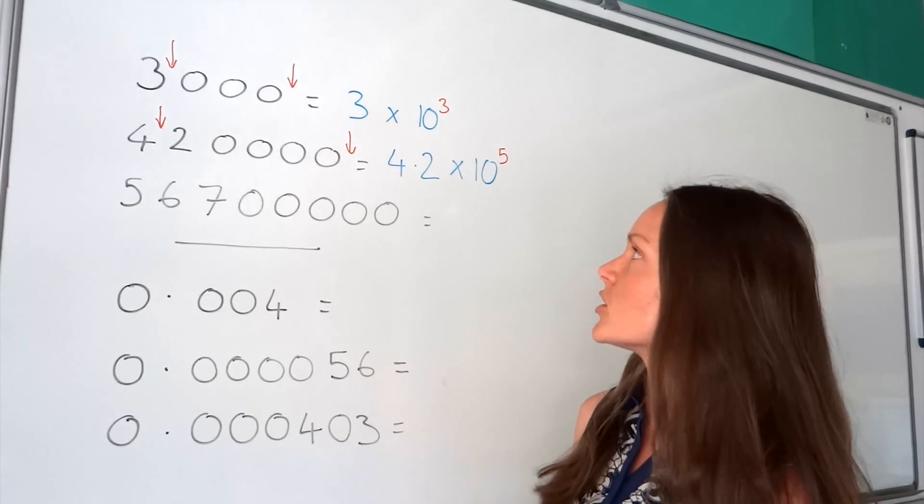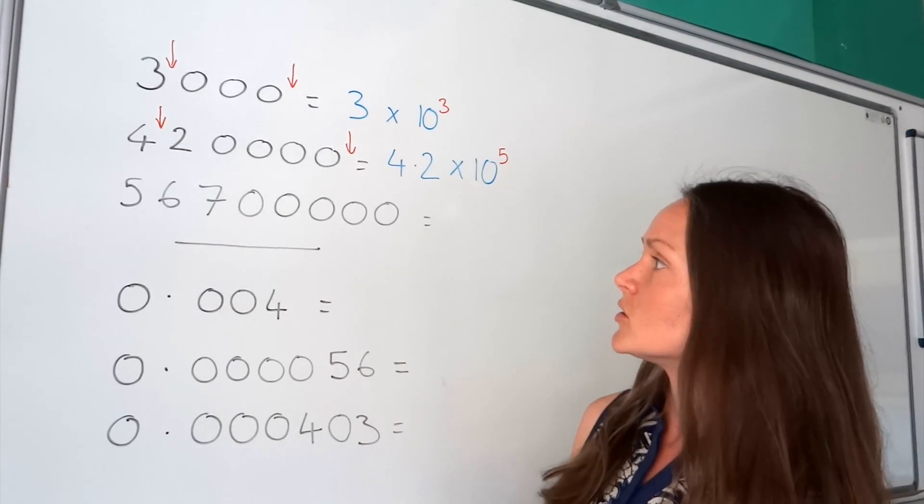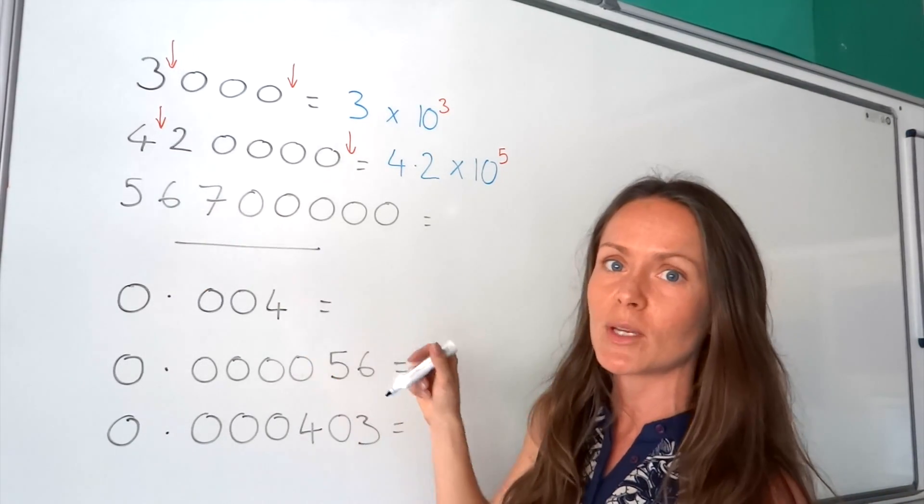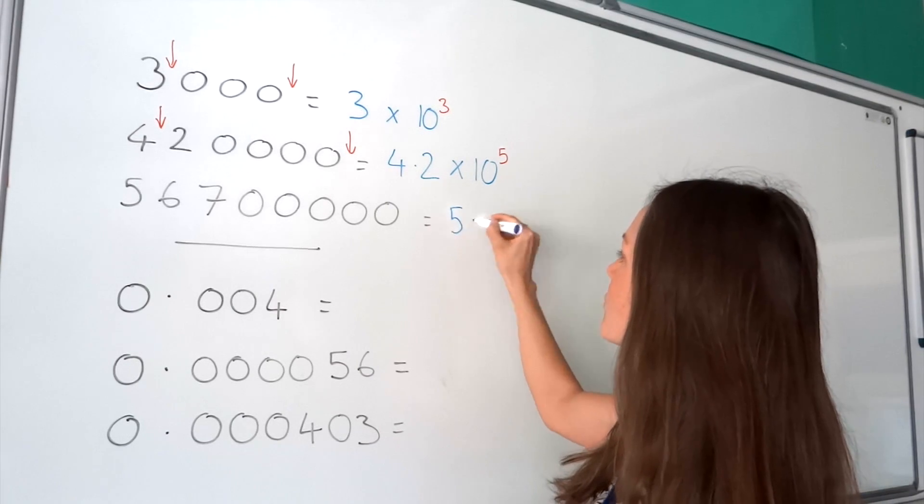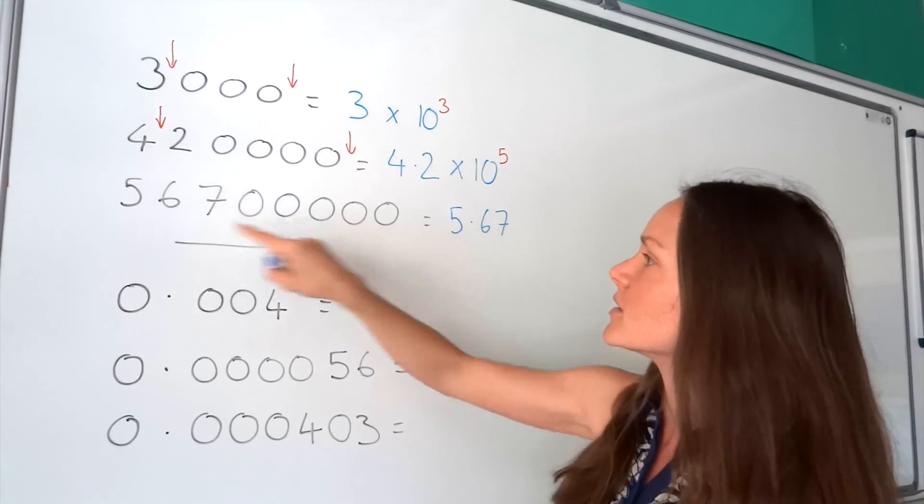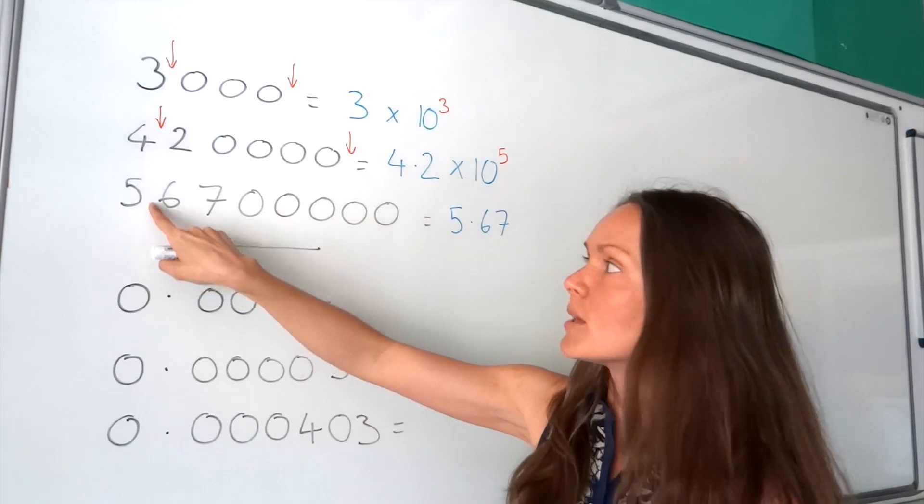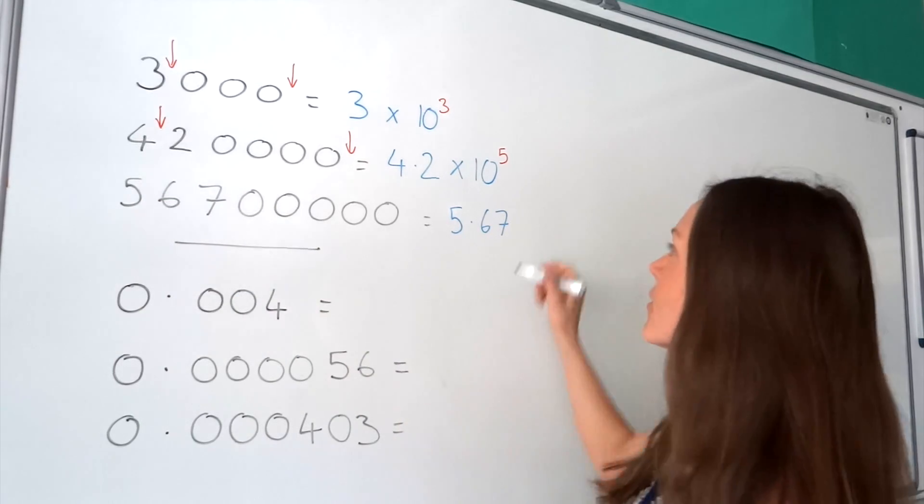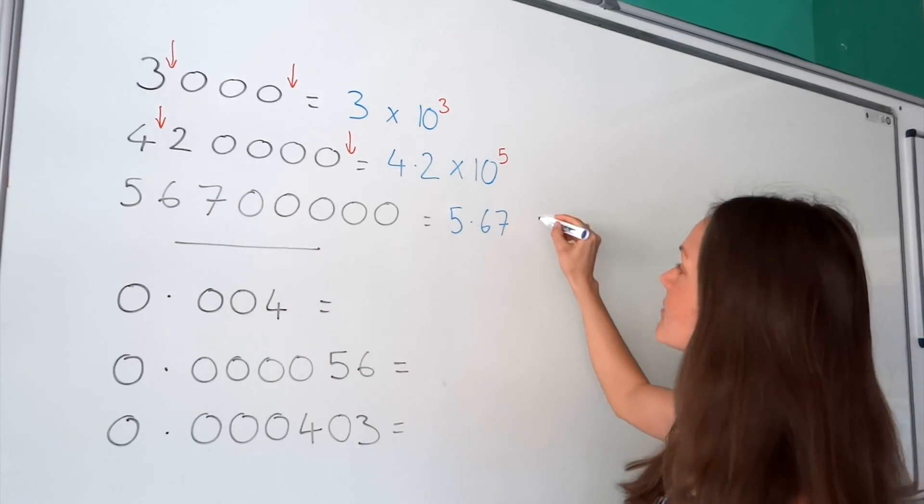Now, the last large number. So the first thing you need to do is to make sure this number is between 1 and 10. So 5.67. Okay, so I'm using the same numbers, I'm just putting the decimal in between the 5 and 6. Then, as before, we write times 10.